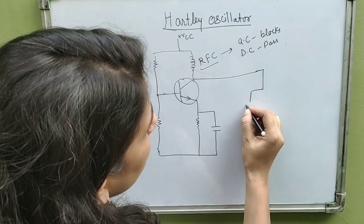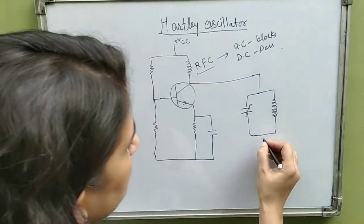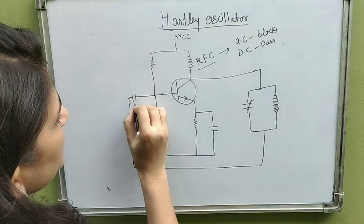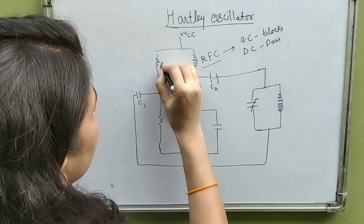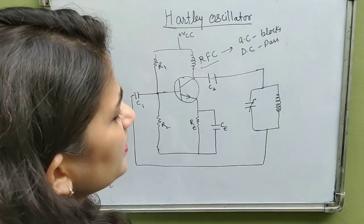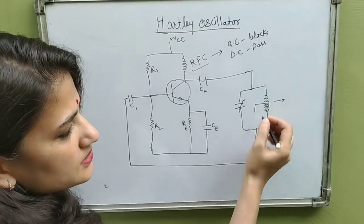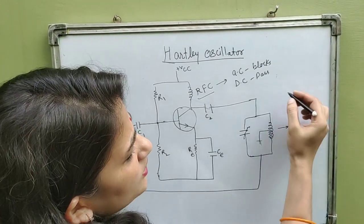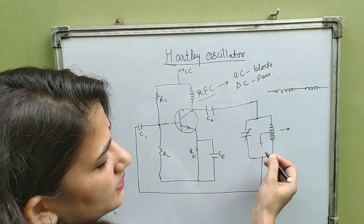This is your tank circuit. The tank circuit, as you know, is a combination of capacitance and inductance. The key difference in the Hartley oscillator is that this single coil is divided into two parts — it is center-tapped. We can assume that two inductors are connected in series. This is the use of the center-tapped coil.